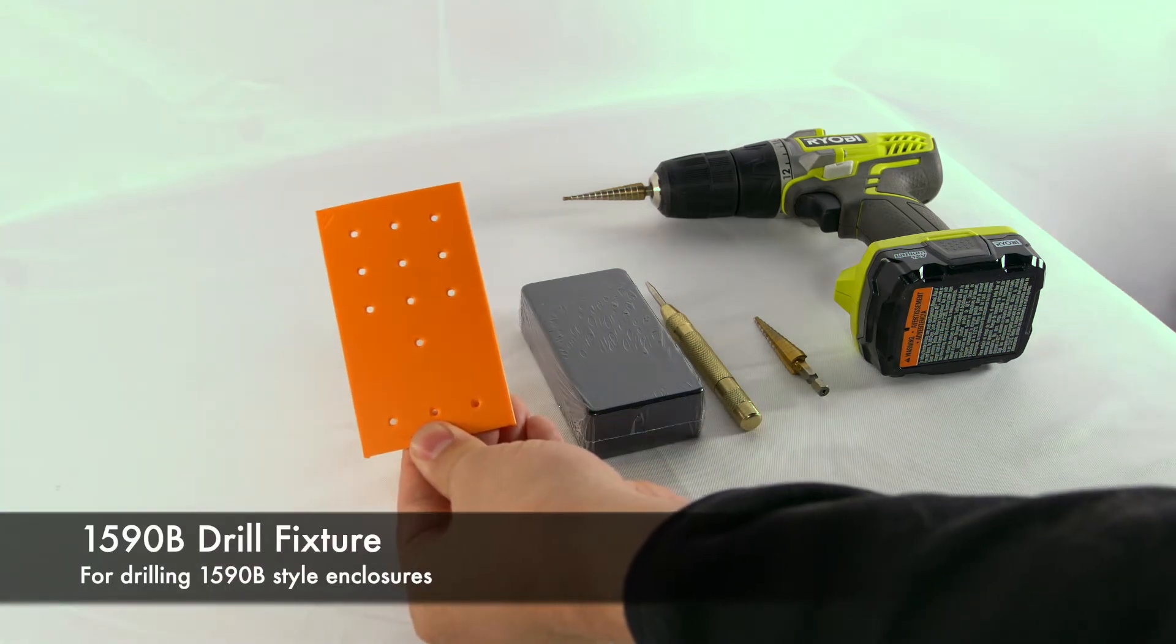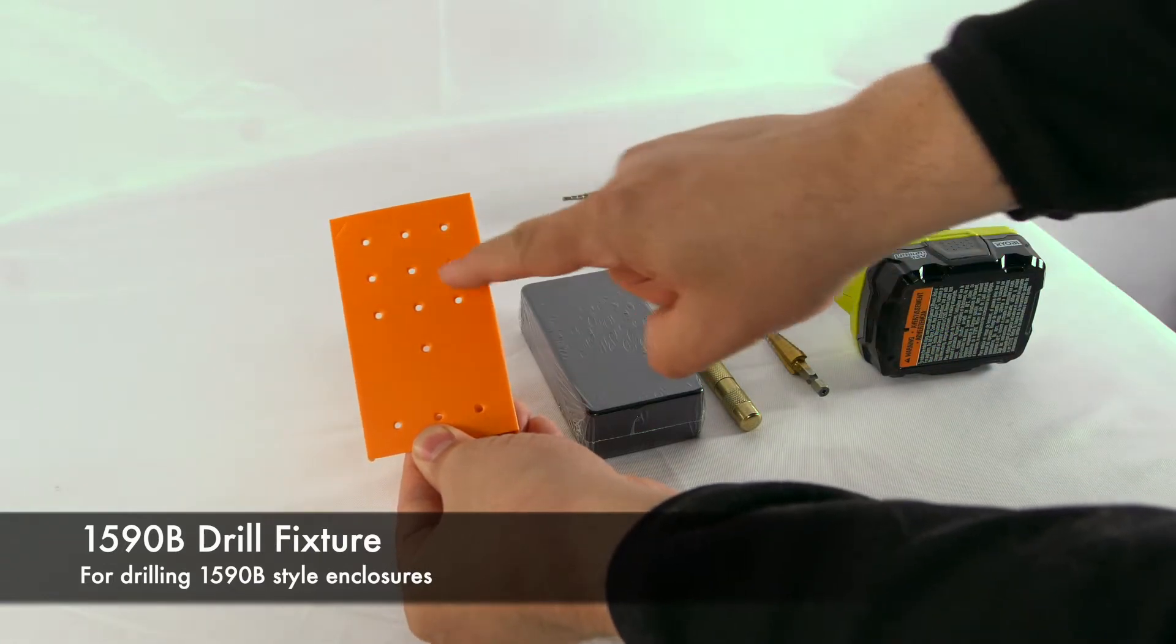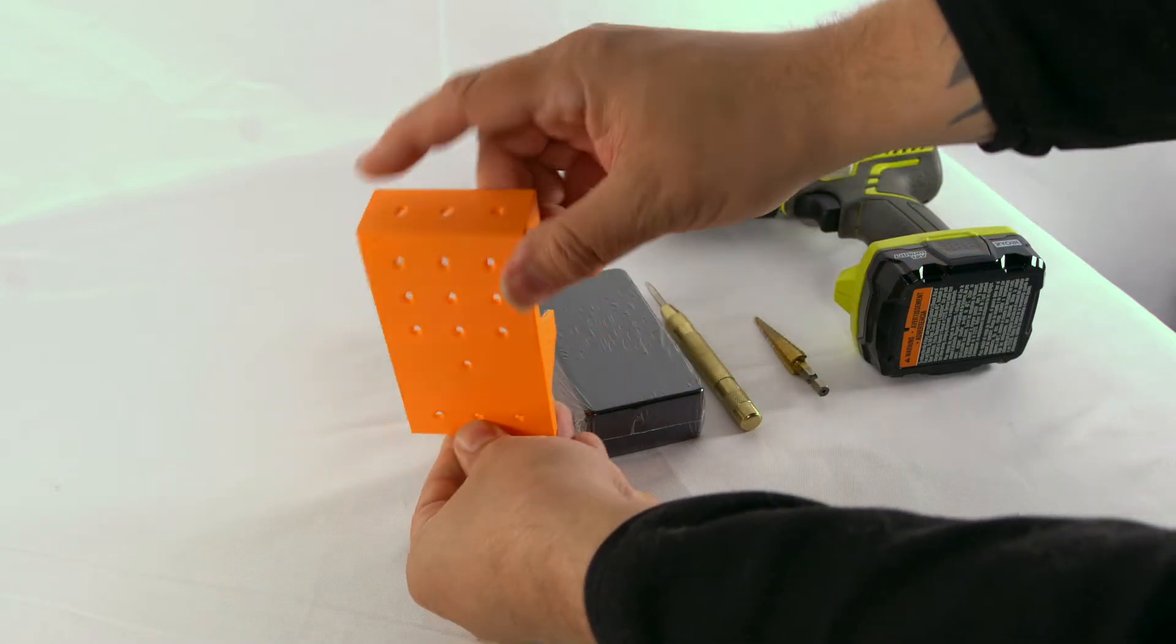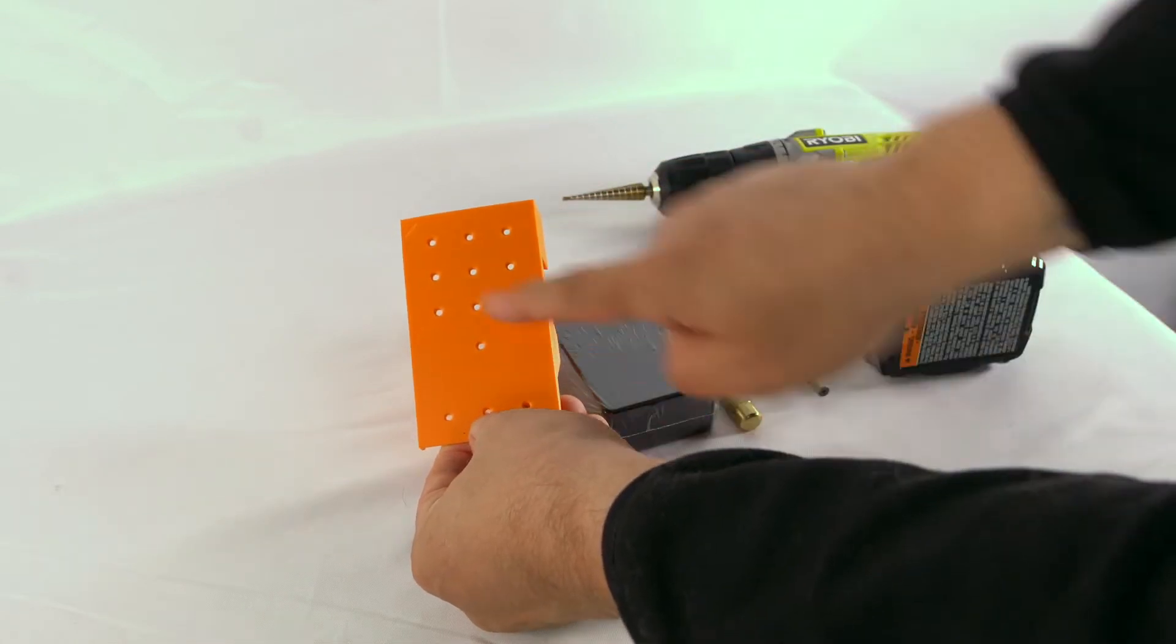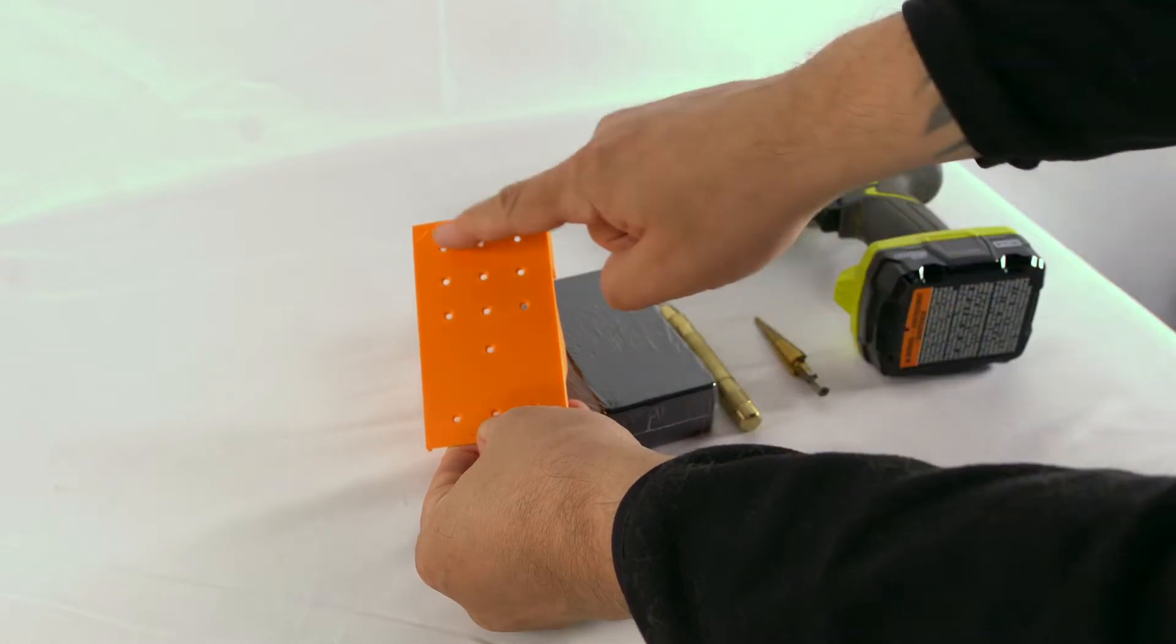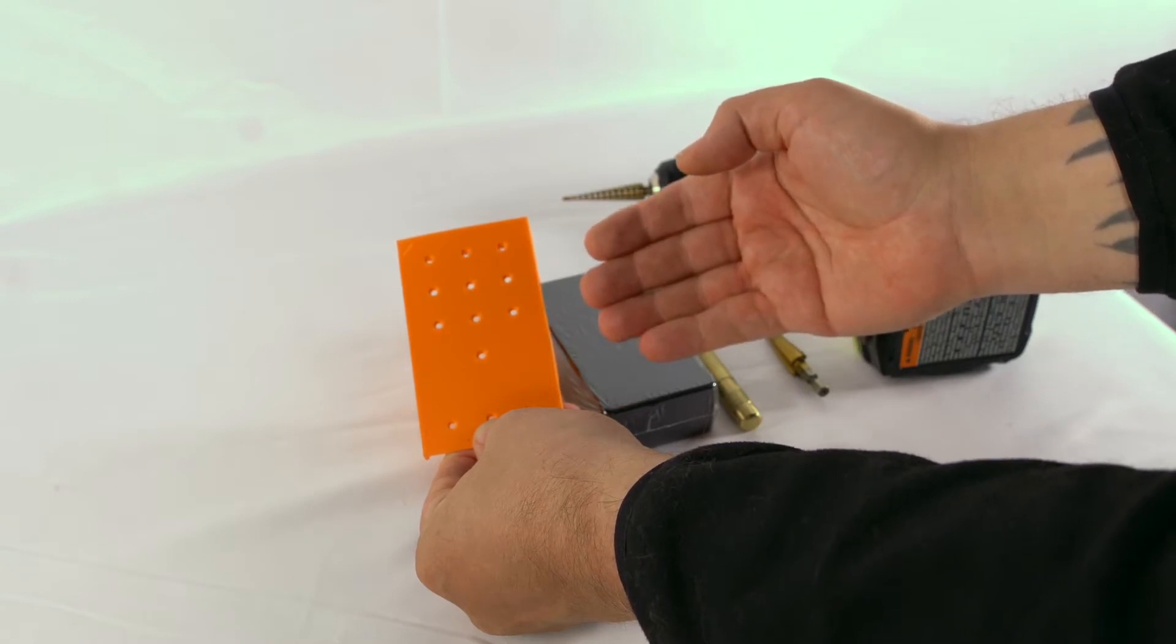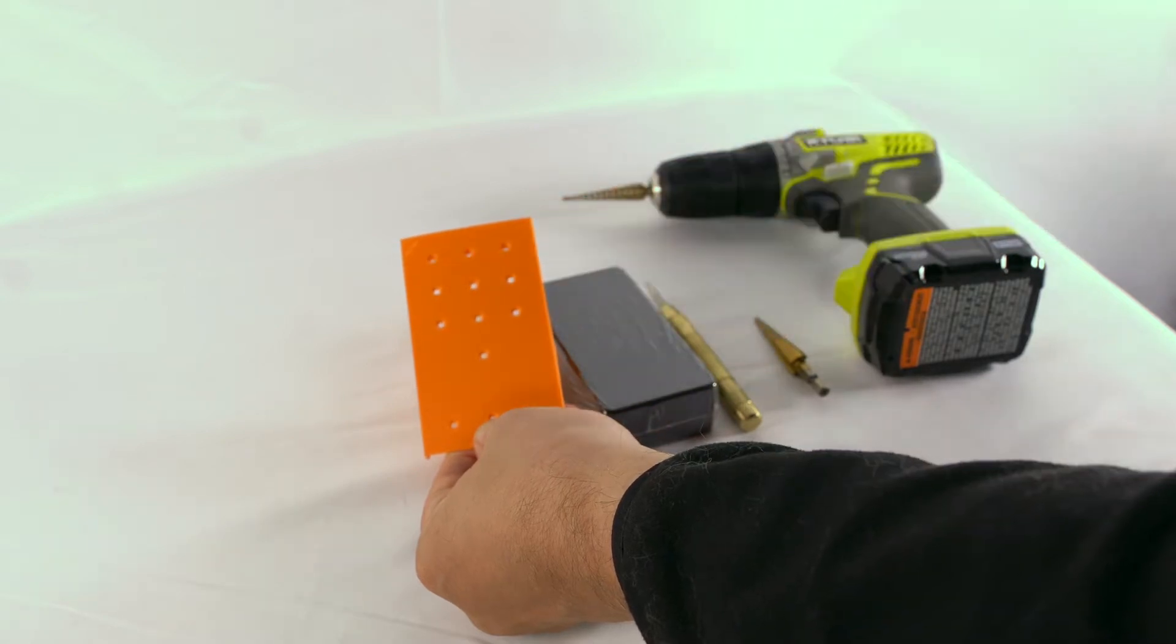This is the 1590B pedal jig. As you can see, there are many hole configurations that let you do many styled pedals. You can do a three knob configuration with top jacks, or this way. You could do a four knob configuration, a five knob configuration, and if you're one of those really wild builders that wants to do a hundred mods and have tons of toggle switches, well, you've got a lot of options for that as well.